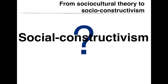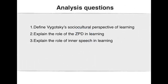So let us look at the origin of this learning theory. But first, let us go over the analysis questions: Define Vygotsky's socio-cultural perspective of learning. Explain the role of the zone of proximal development in learning. And explain the role of inner speech in learning.